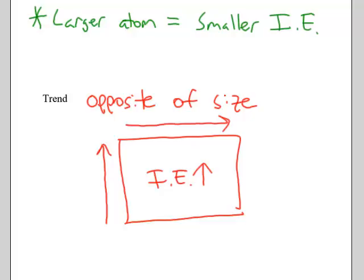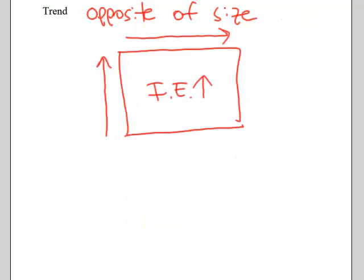So again, say I give you three elements: boron, oxygen, and aluminum. And ask you which of those has the smallest ionization energy and which would have the largest ionization energy.